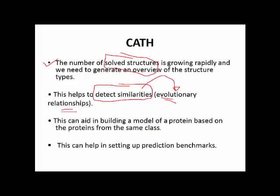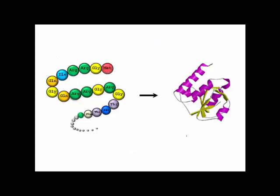With this aim, the CATH database was built — that is the benchmark and the advantage of CATH. Along with structural information, through the CATH database you will be able to identify evolutionary relationships. Proteins are grouped in such a way that you can identify evolutionary relationships. That is the first advantage of CATH over PDB.